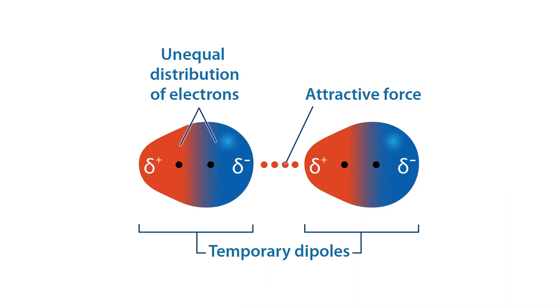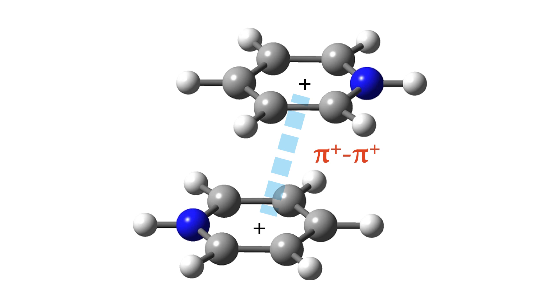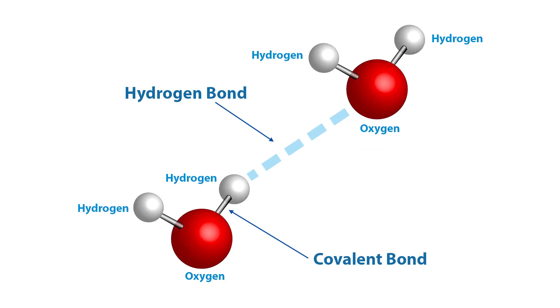An important factor to consider when choosing stationary phases or techniques relates to the inherent properties of your target analytes. Common retention mechanisms in reverse phase chromatography are dispersive interactions, polarizable pi-pi interactions, and hydrogen bonding.